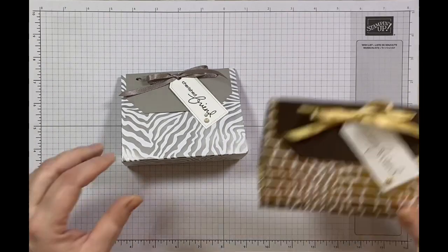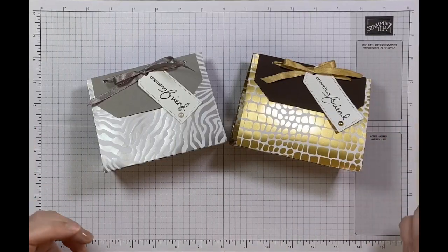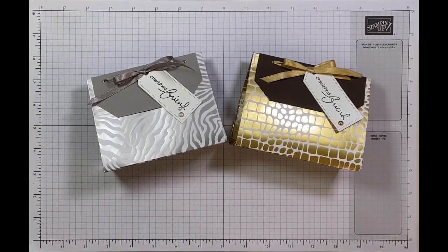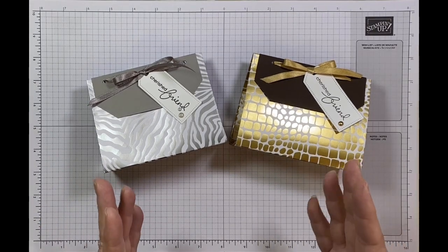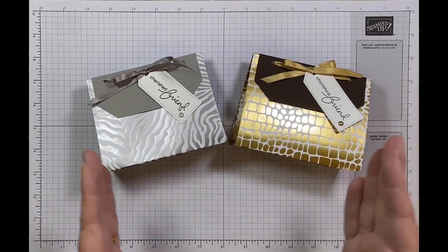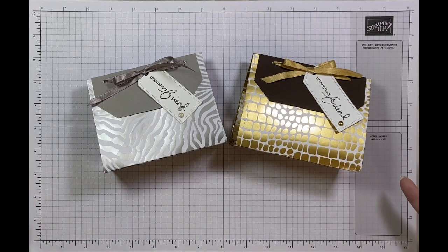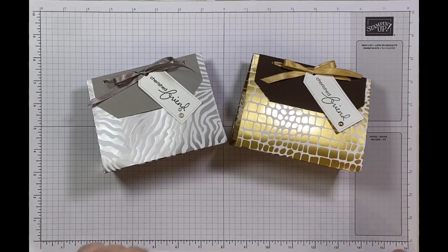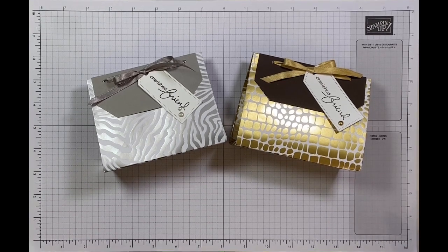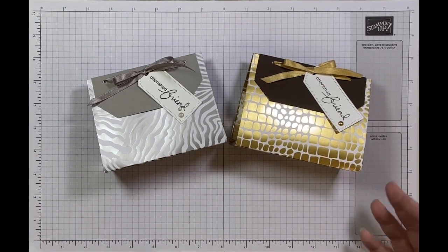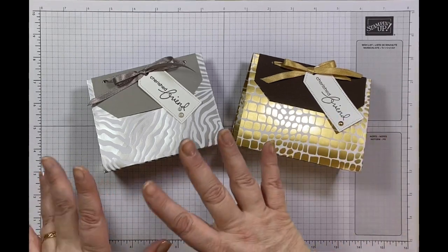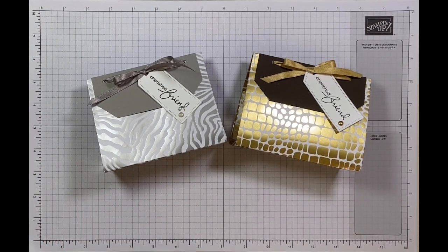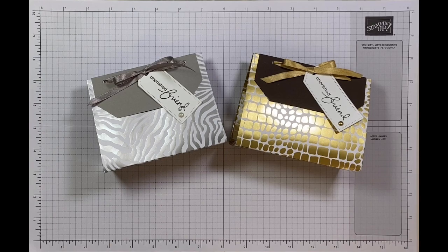So these are my completed fold flat gift bags using the Like an Animal Designer Series paper and I do love this paper so much. These are the 10 by 10 versions. You can pair it down to like a 6 by 6 or a 5 by 5, or you can make it up to a 12 by 12 so you can make them different sizes. I love the way that I could store them flat if I wanted to so I could make up a whole batch of them. This one's lovely and vibrant and bright but this one's got that luxe feel with the muted just two tone colors.